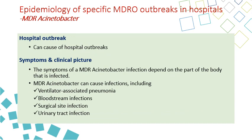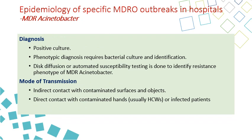Hospital outbreaks can be caused by Acinetobacter, and symptoms depend on the body site affected. Common infections include VAP, CLABSI, SSI, and CAUTI. Diagnosis is by positive culture and phenotypic diagnosis, and resistance is determined by disc diffusion or automated susceptibility testing.